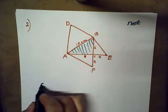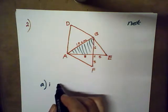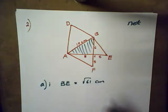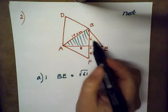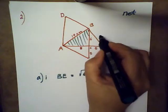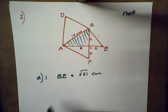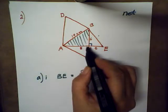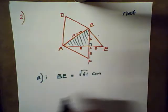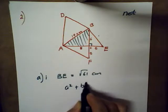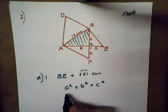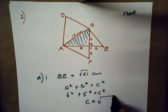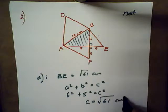Question one: show that BE equals the square root of 61 centimeters. I've got a triangle, it's a 90 degree triangle, that means we can use the Pythagorean theorem. So I have A squared plus B squared equals C squared. We have 6 squared plus 5 squared equals C squared, and C would be the square root of 61 centimeters.